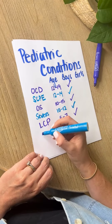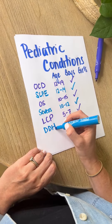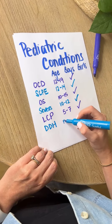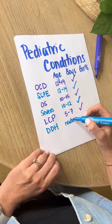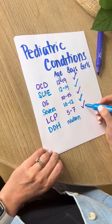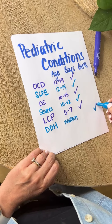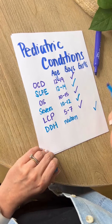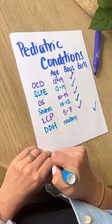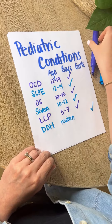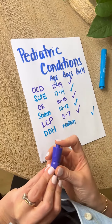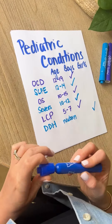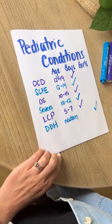Next we have developmental dysplasia of the hip. You can see we've gone in reverse of age, so this is going to be the youngest — common in newborns. And this is actually the only one that is more common in females. There's quite a bit of research to support that estrogen released in the female fetus could lead to the ligament laxity that predisposes female children to developmental dysplasia.